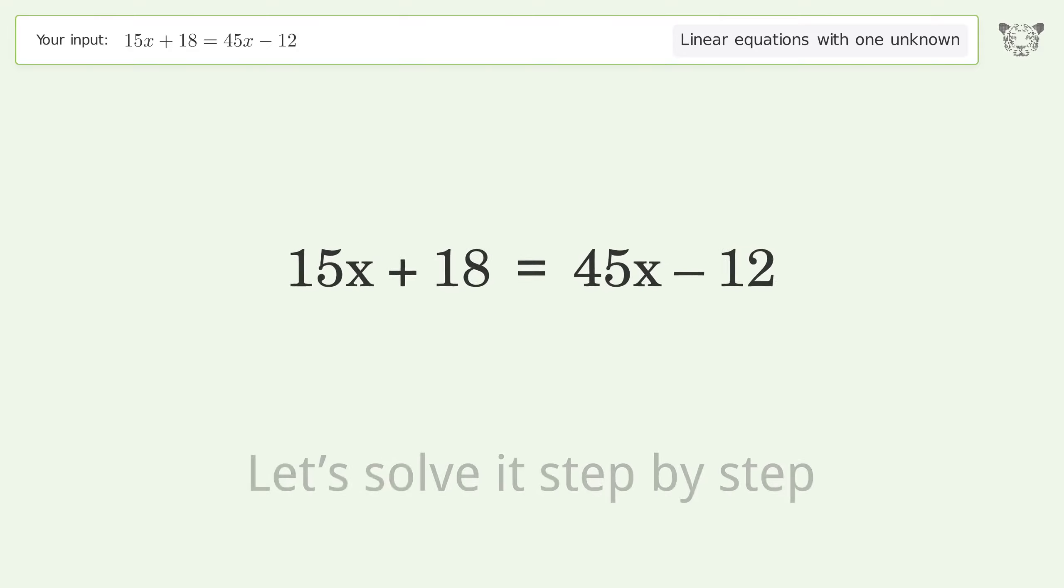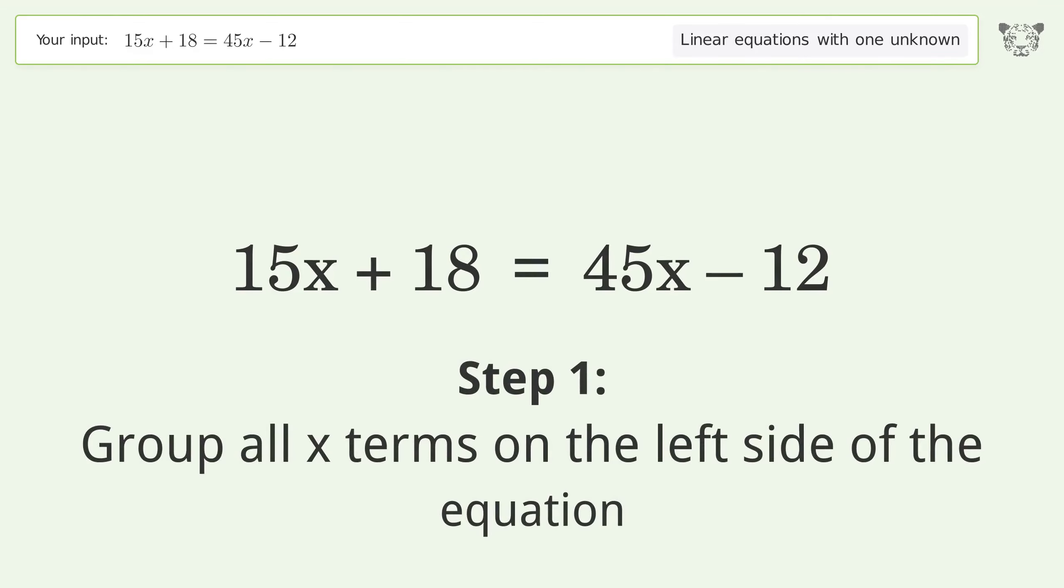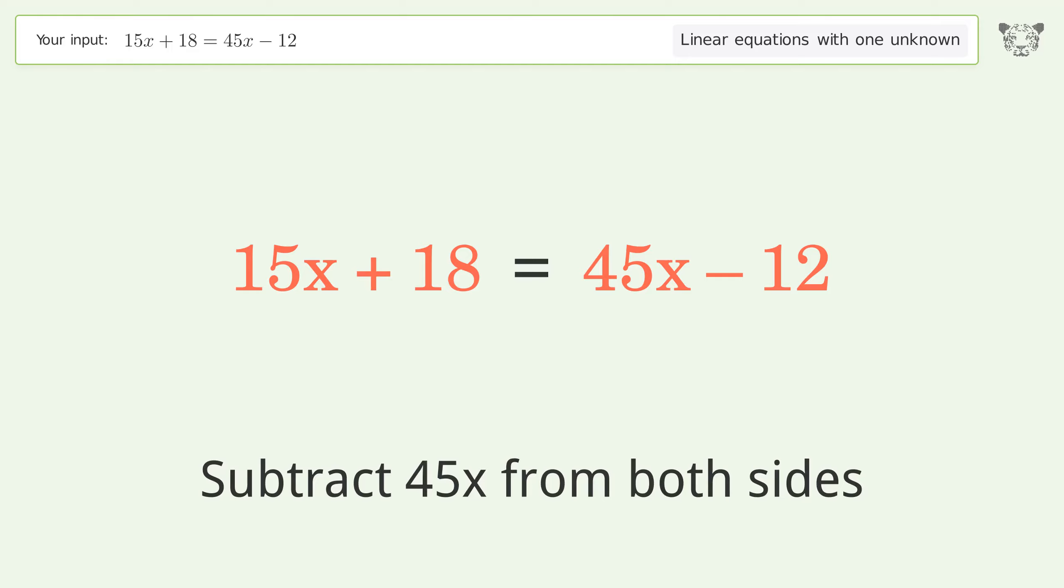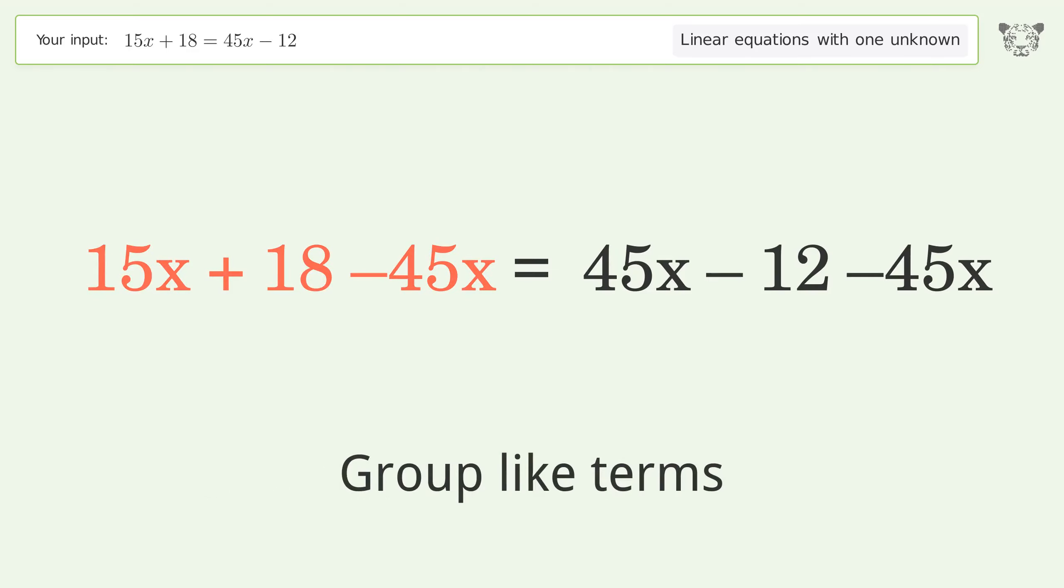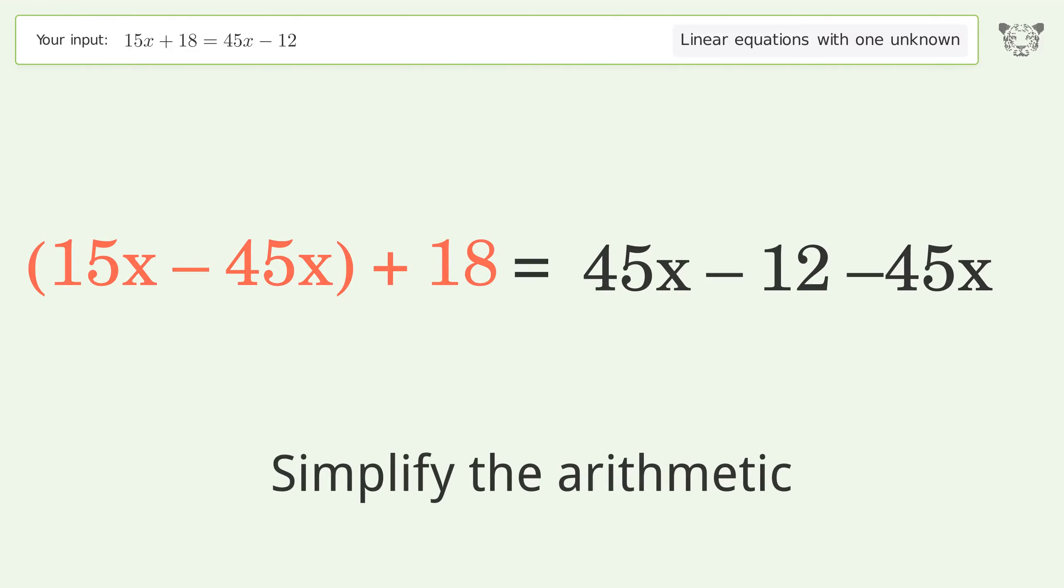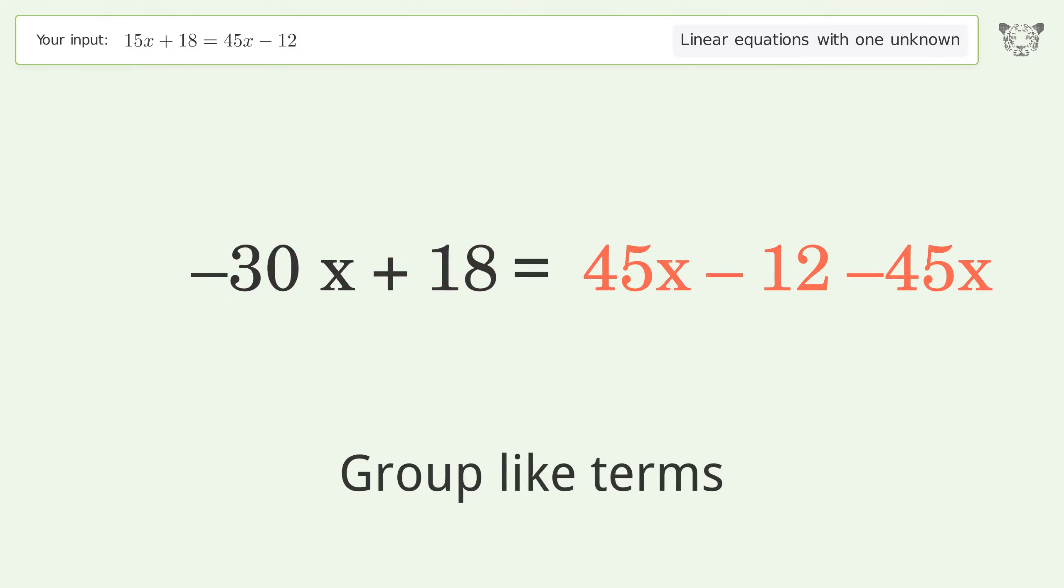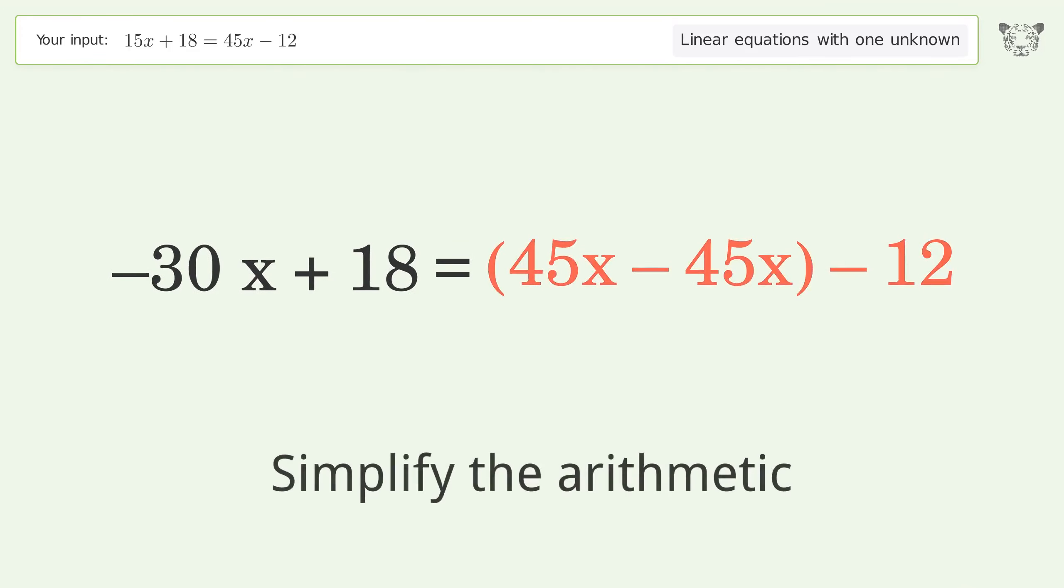Let's solve it step by step. Group all x terms on the left side of the equation. Subtract 45x from both sides. Group like terms. Simplify the arithmetic. Group like terms. Simplify the arithmetic.